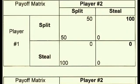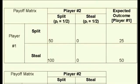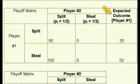We start by looking at the payoff matrix for the split or steal game. We begin with the assumption that there is an equal likelihood that player number 2 will choose steal as he will choose split. So assuming player number 2 has an equal likelihood of choosing split or steal, player number 1 is going to calculate his expected payoff from choosing steal.